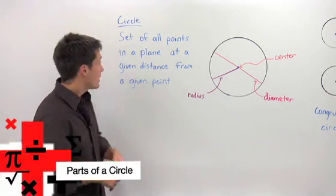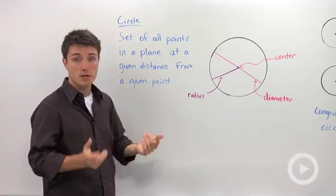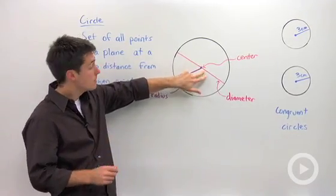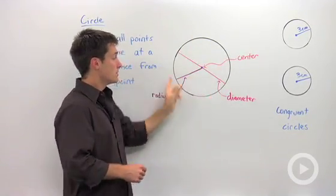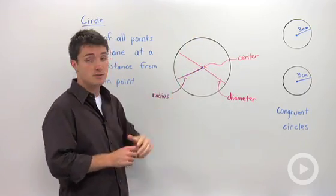The definition of a circle is the set of all points in the same plane that are a given distance from a given point. So here we have a given point, our center, and the circle which is the black line, and those are all the points that are a given distance away from the center.